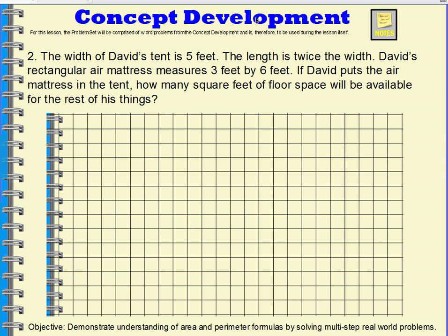Problem 2. The width of David's tent is 5 feet. The length is twice the width. David's rectangular air mattress measures 3 feet by 6 feet. If David puts the air mattress in the tent, how many square feet of floor space will be available for the rest of his things? To solve this problem, I'm going to use grid paper, where each square represents 1 foot by 1 foot. David has a tent that is 5 feet wide.